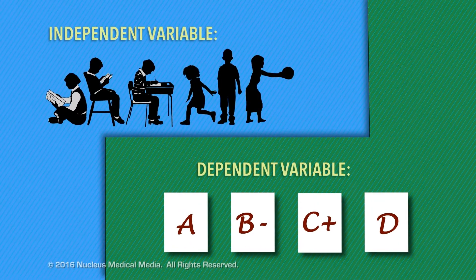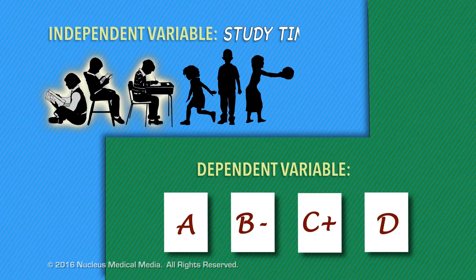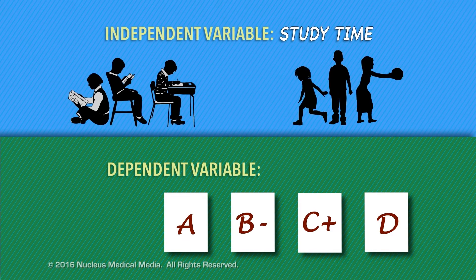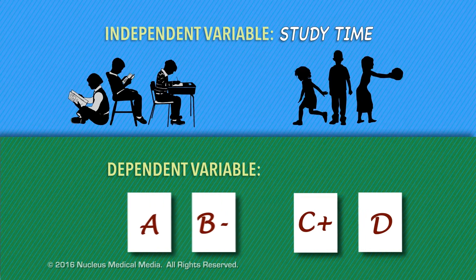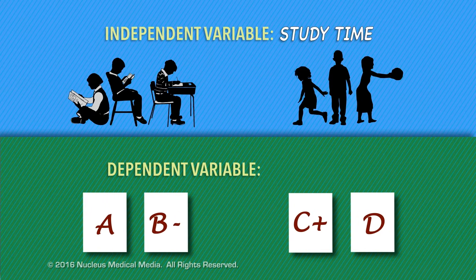You're expecting test grades will be affected. In this experiment, the independent variable is the study time. And the dependent variable — the thing you're measuring or going to observe — is the test grades.